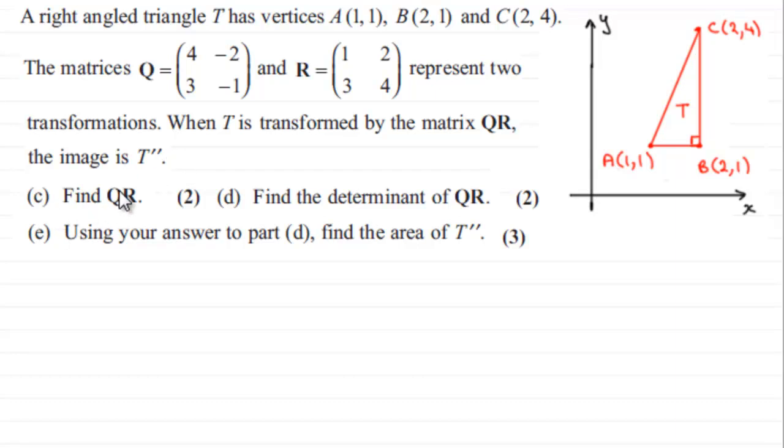We've got to find out what QR is. We've also got to find the determinant of QR, and then using the answers to part D, find the area of T double prime. So if you'd like to give this a go, just pause the video and come back when ready, and you can check your solution against mine.